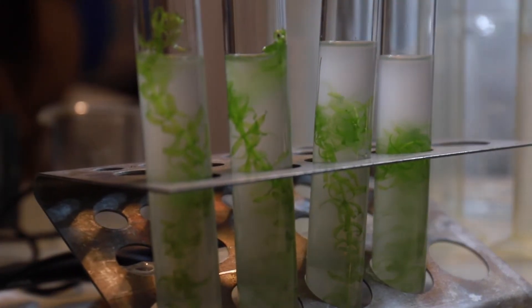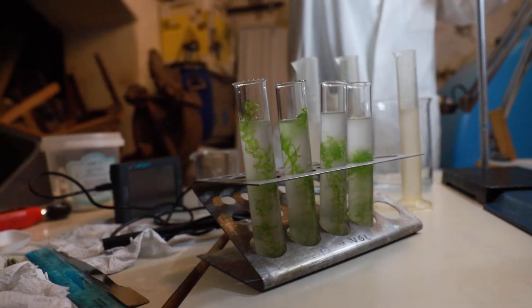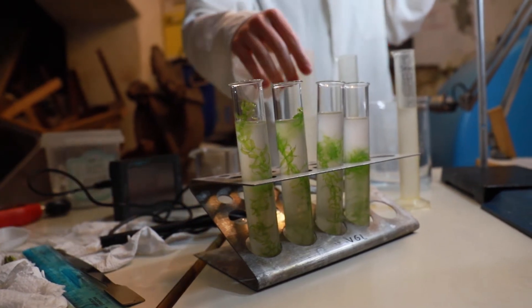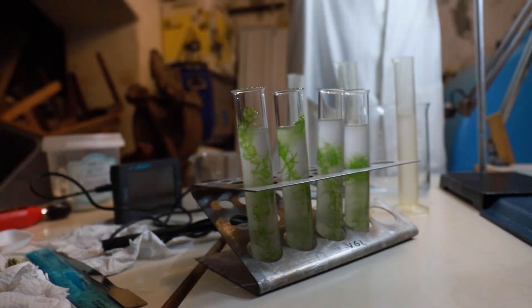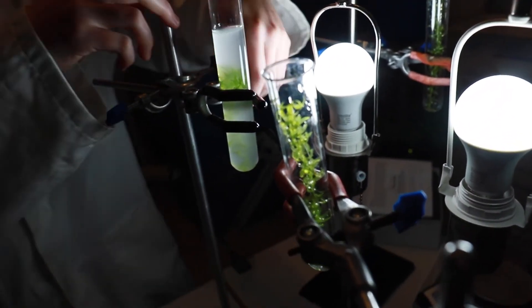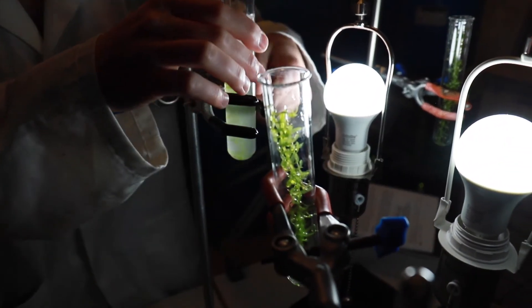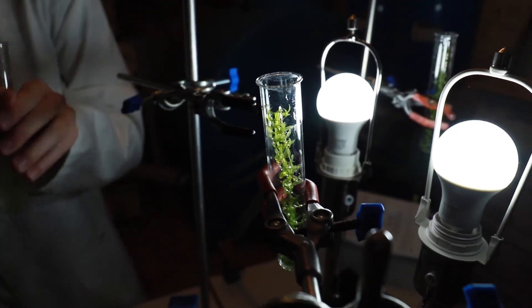So I changed pretty much everything I could think of. I changed the carbon dioxide concentration, the way I was cutting the leaf discs, the light source, the light intensity. I even tried some outside and it wasn't working. The conclusion I've come to is that the problem was the leaves were too young.